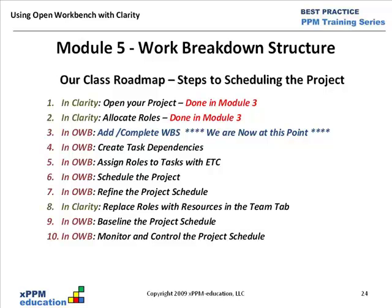Following this module, we get into creating task dependencies in Workbench, then assigning roles to tasks with ETCs in Workbench. Item six, we schedule the project in Workbench. Item seven, we review and refine the schedule in Workbench. Item eight, we go back to Clarity and work with the resource manager to replace roles with resources. Item nine, back in Workbench — or in Clarity — we baseline the project. And finally, item ten, we get into the monitoring and controlling process, which is an ongoing weekly activity.